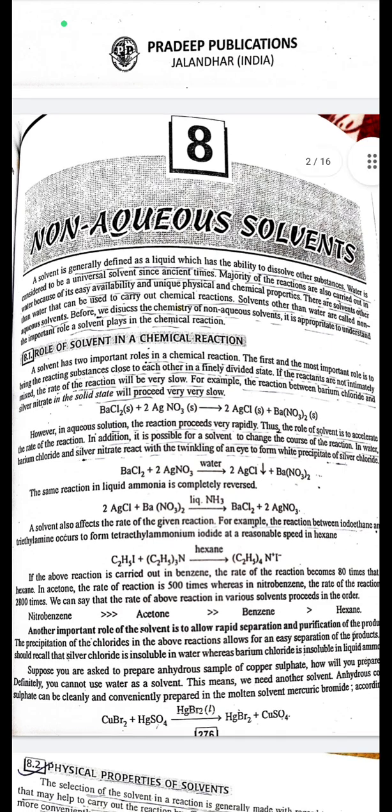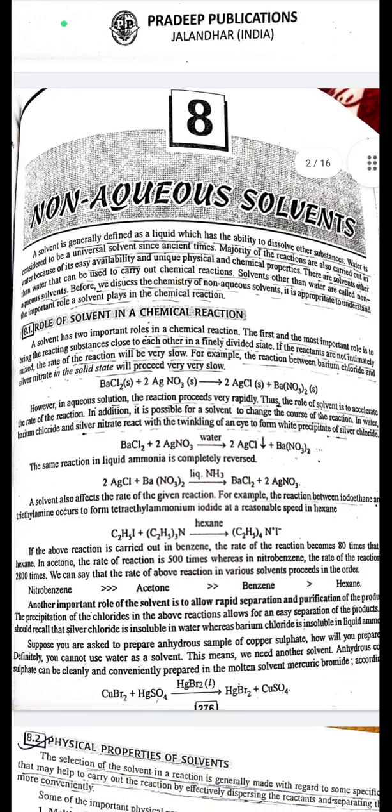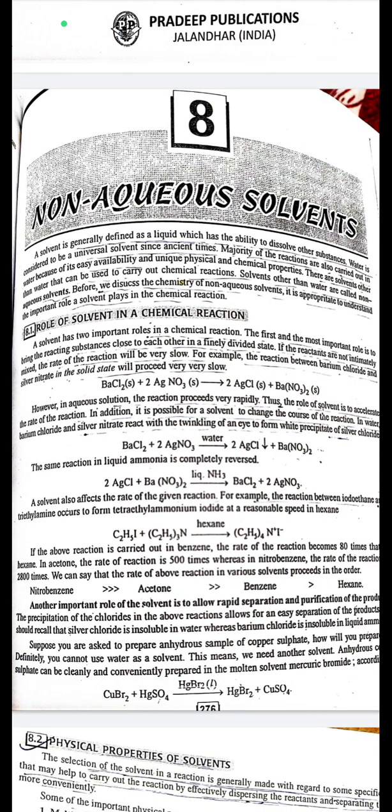Article 8.1: Role of Solvent in a Chemical Reaction. A solvent has two important roles in a chemical reaction. The first and most important role is to bring the reacting substances close to each other in a finely divided state. If the reactants are not intimately mixed, the rate of reaction will be very slow. For example, the reaction between barium chloride and silver nitrate in the solid state will proceed very slowly: BaCl₂ + 2AgNO₃ → 2AgCl + Ba(NO₃)₂.